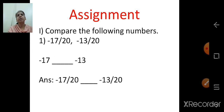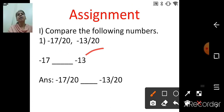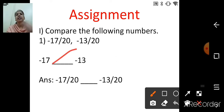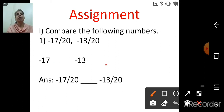Here is an assignment: compare negative 17 upon 20 and negative 13 upon 20. Both denominators are equal — both are 20 — so compare the numerators: negative 17 and negative 13. Since 17 is greater than 13 as positive numbers, negative 17 is less than negative 13. So negative 17 upon 20 is less than negative 13 upon 20.